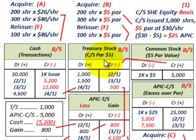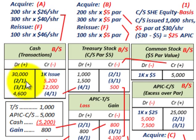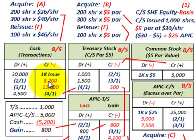Let's go through the numbers. Say we acquire 200 shares at $26 per share on date 2-1. That amount — we'd credit or reduce our cash for $5,200. That is based on the price it cost us to acquire those shares, the same as with the cost method — whatever the price is, you have to pay it.